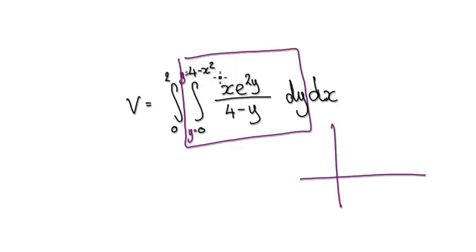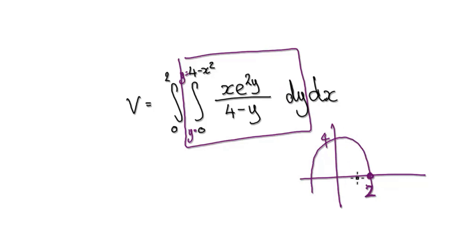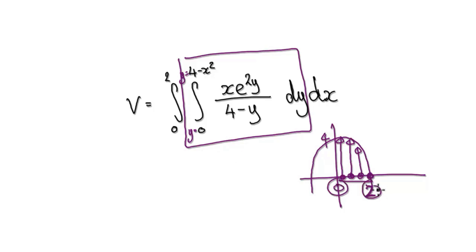The graph y = 4 − x² has a y-intercept of 4, and x-intercepts at ±2 since 2² = 4. Moving parallel to the y-axis, we go from 0 up to the line y = 4 − x², and we scan x from 0 to 2. So the region of integration is the area under that curve between x = 0 and x = 2.